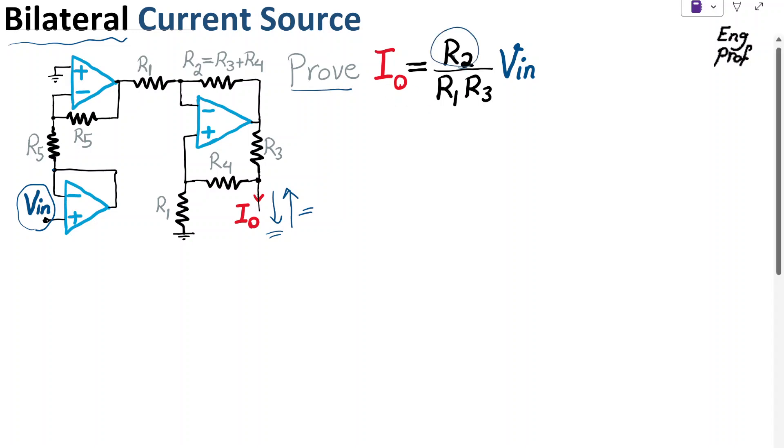And we want to prove that given this circuit, I_out is simply R2, which is this resistor shown here, divided by R1 and then divided by R3. So that's what we want to show in this circuit.